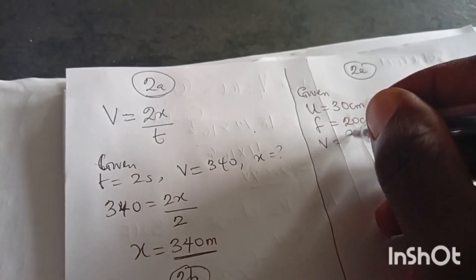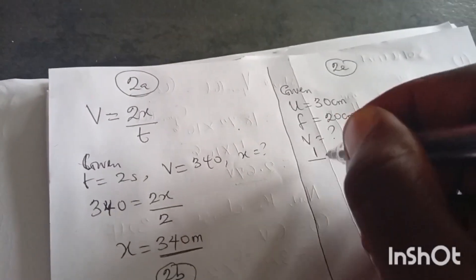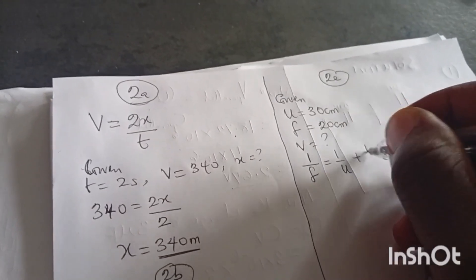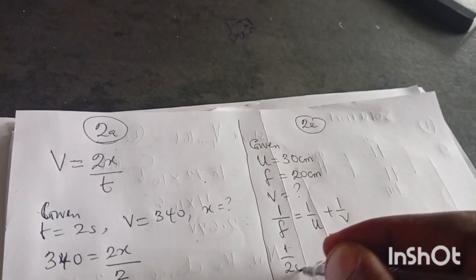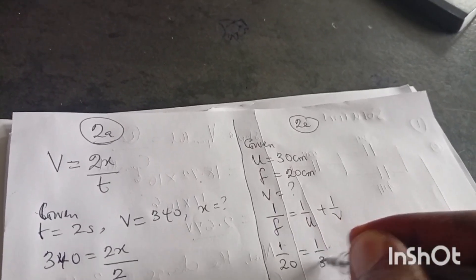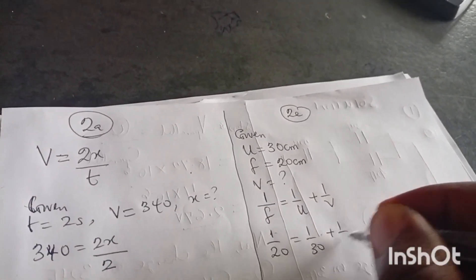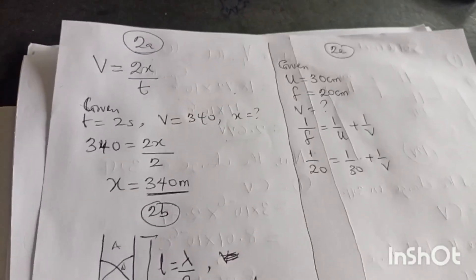Now let's turn into mathematics and let's see how it goes. So we want to find V. The formula, anytime, anywhere in the world, 1 over F equals 1 over U plus 1 over V stands anywhere in the world. So we have 1 over 20 equals to 1 over 30 plus 1 over V. Please don't rest on calculator.